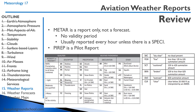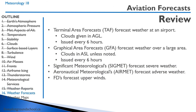A PIREP is a pilot report that pilots give to one another. Terminal Area Forecasts forecast weather at an airport — clouds are given in AGL, issued every six hours. Graphical Area Forecasts give weather over a large area with clouds in ASL unless noted. SIGMETs forecast severe weather, and AIRMETs forecast adverse weather not covered in the GFAs. The FDs forecast upper winds.